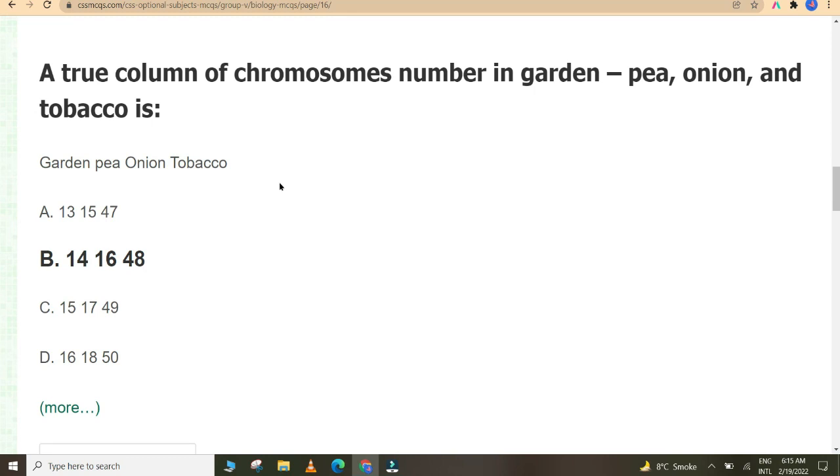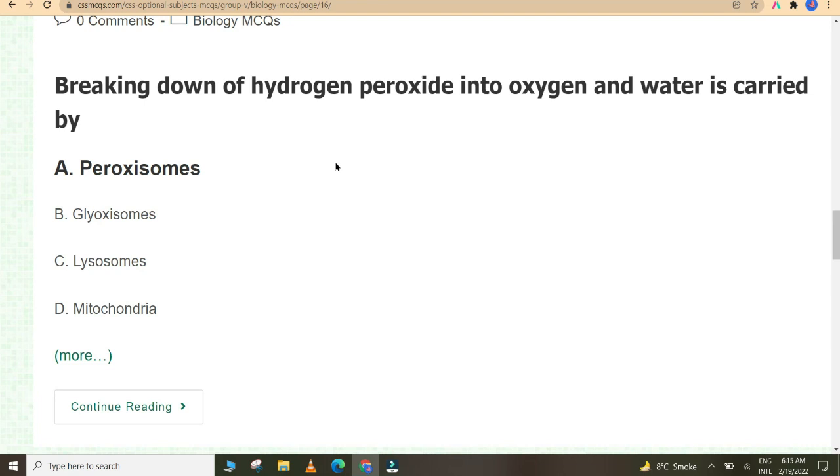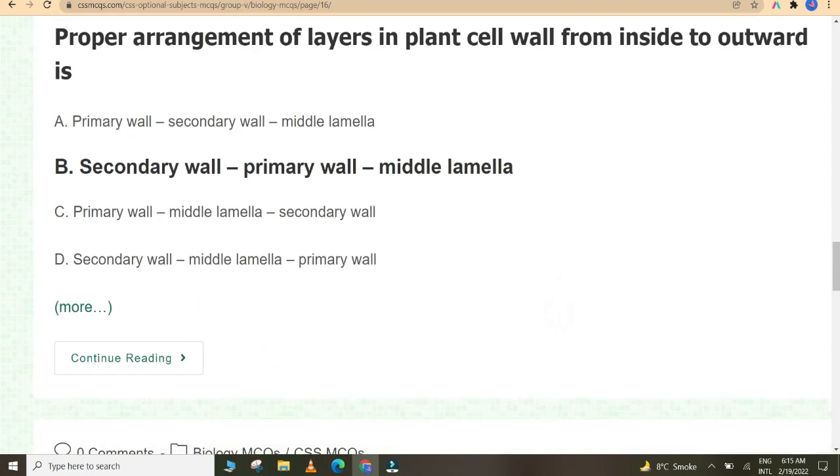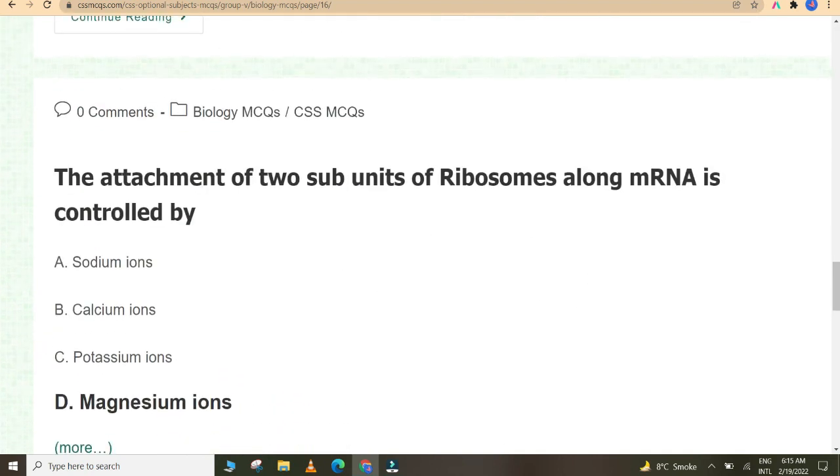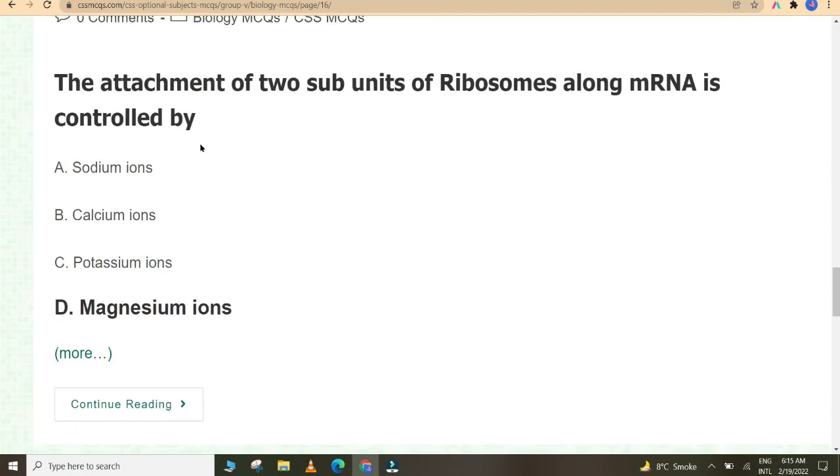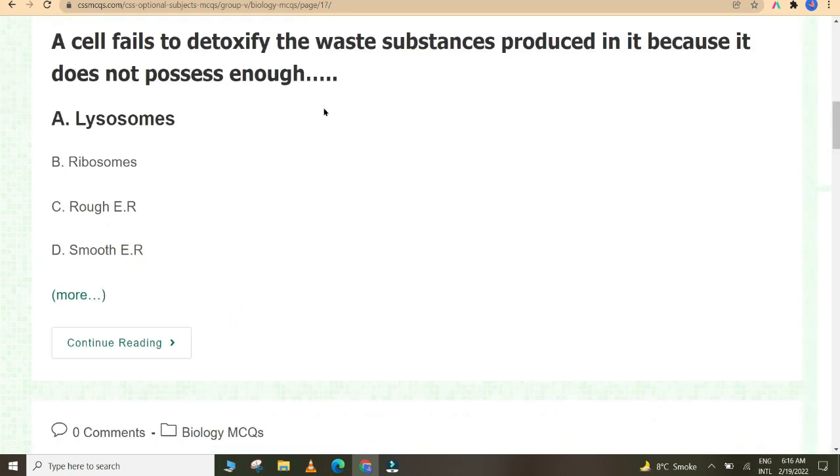The size of ribosomes in prokaryotic cell is 70S. A true column of chromosomes number in garden pea, onion, and tobacco is 14, 16, and 48. Breaking down of hydrogen peroxide into oxygen and water is carried by peroxisomes. Proper arrangement of layers in plant cell wall from inside to outside is secondary wall, primary wall, middle lamella. The attachment of two subunits of ribosomes along mRNA is controlled by magnesium ions.